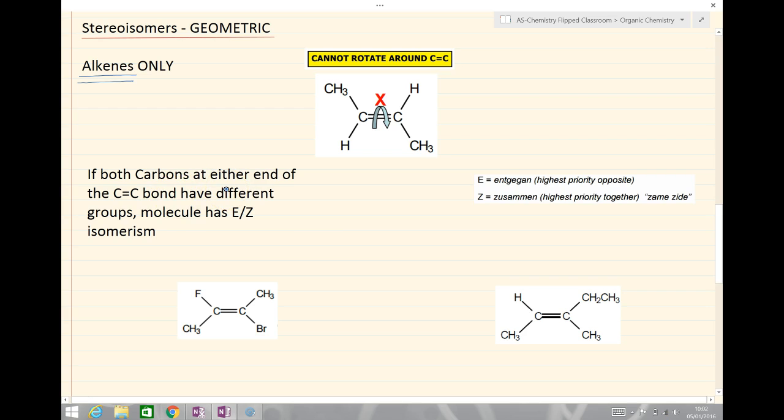if both carbons at either end of the carbon-carbon double bond have different groups, the molecule exhibits or can show EZ isomerism. So, let's just look at what that statement means in our example in the top middle here.